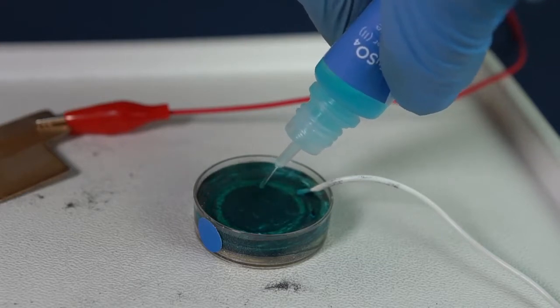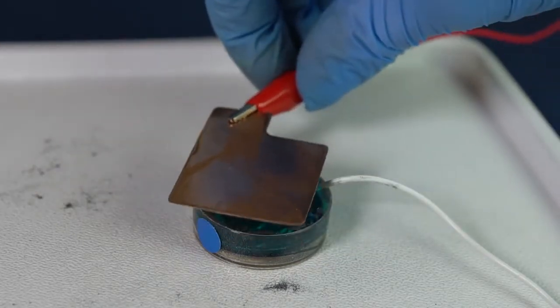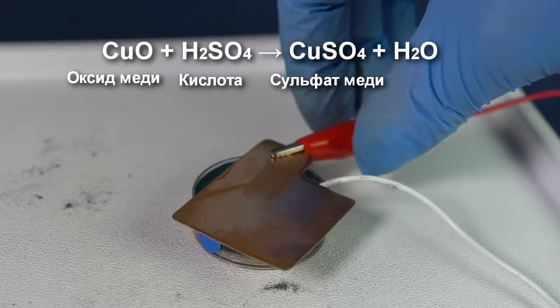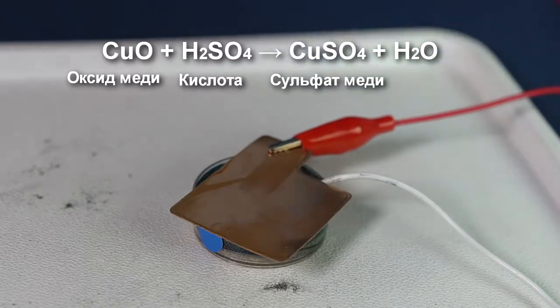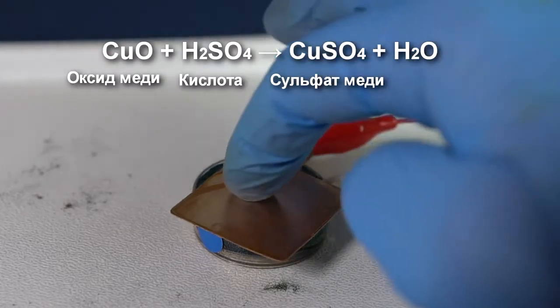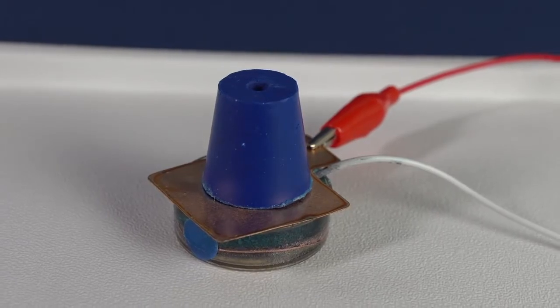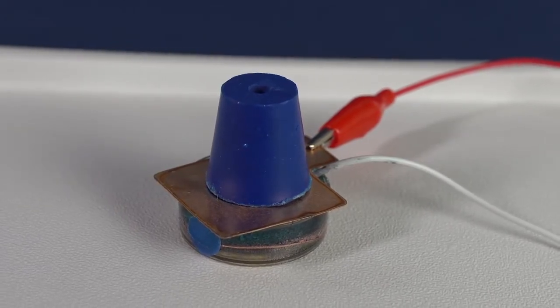When there are hydrogen ions among other ions, the solution is acidic. Copper oxide, which bothers the copper plate to participate in the reaction and give copper ions, is removed from its surface under such acidic conditions. To start the electrochemical reaction, put a rubber stopper on the plate and turn on the electric current.